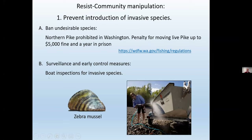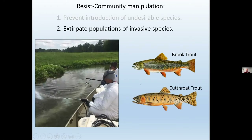Another approach is through surveillance and early control measures. An example is boat inspections for invasive species, particularly zebra mussels. Before you can launch your boat in many western waters, you have to have it inspected and make sure it doesn't carry these invasive species. If it does, you undergo a process of decontamination.